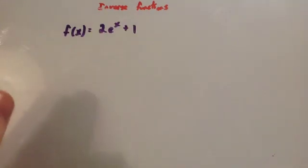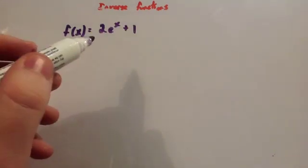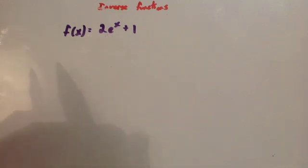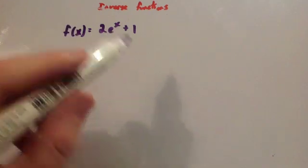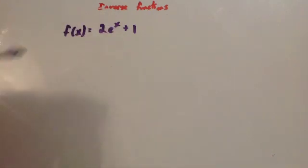We're now going to do it again for a different function: f of x equals 2e to the x plus 1. If you haven't done the work on logarithms or natural logs and e to the x, look at those videos first and then come back to this one.